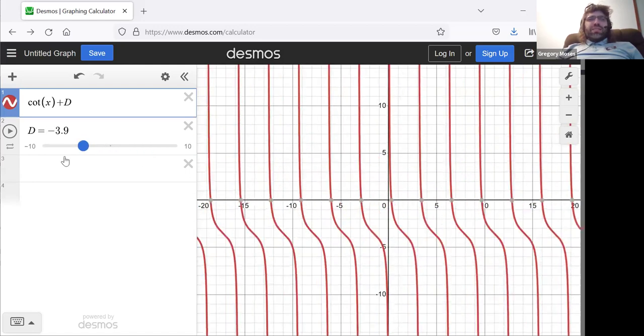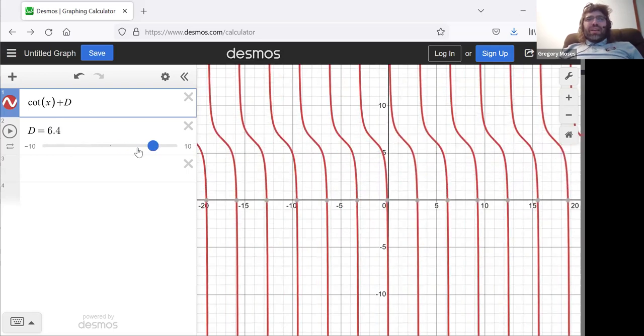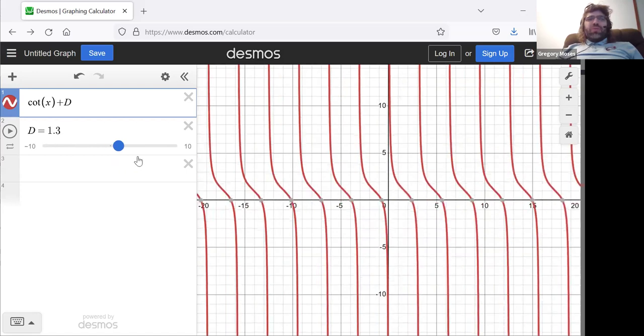Exactly what we would probably have expected. It moves the cotangent up and down vertically.